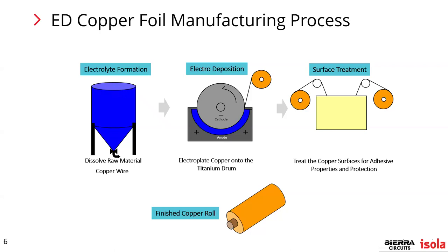From a sustainability standpoint, copper foil is made entirely from recycled copper. At Circuit Foil Luxembourg, for example, they actually use the little strip cut off tin food cans — literally dump truck loads of those strips are brought into the plant, dissolved, and made into copper foil at their facility.